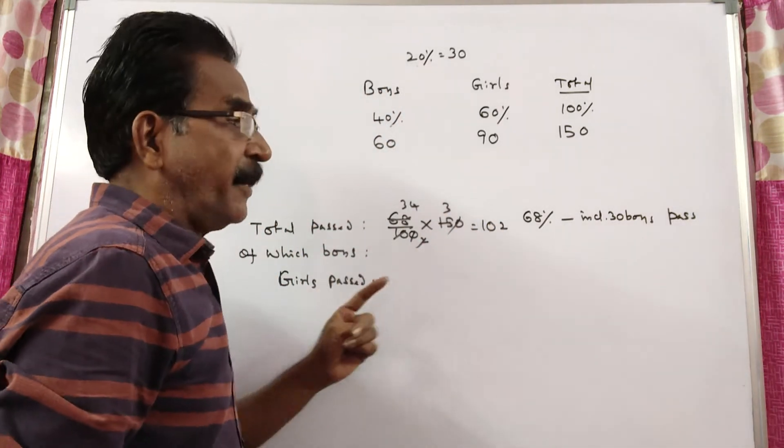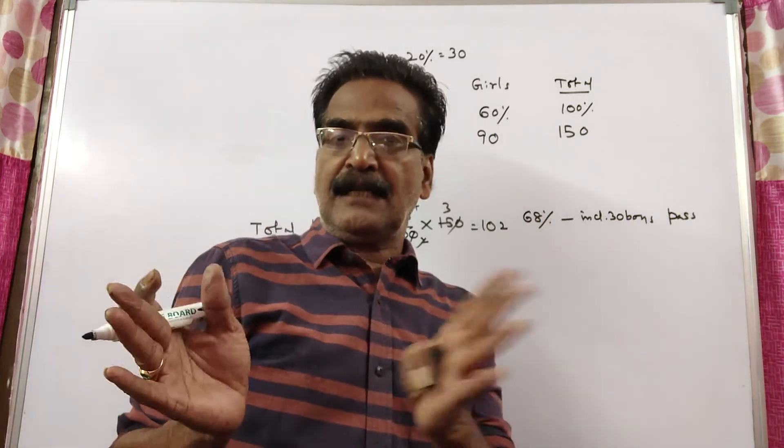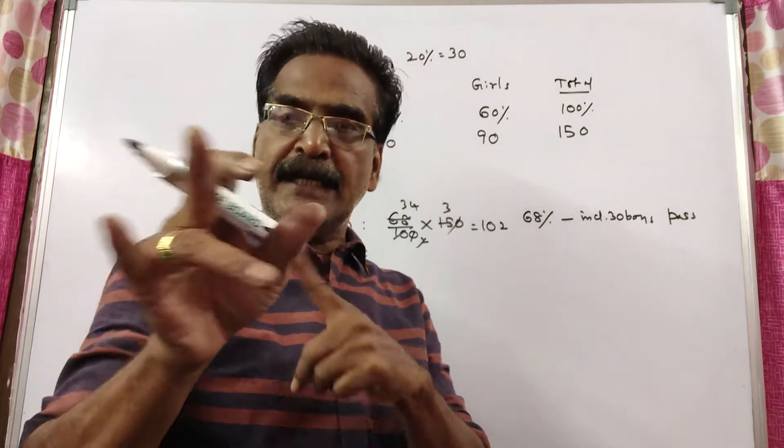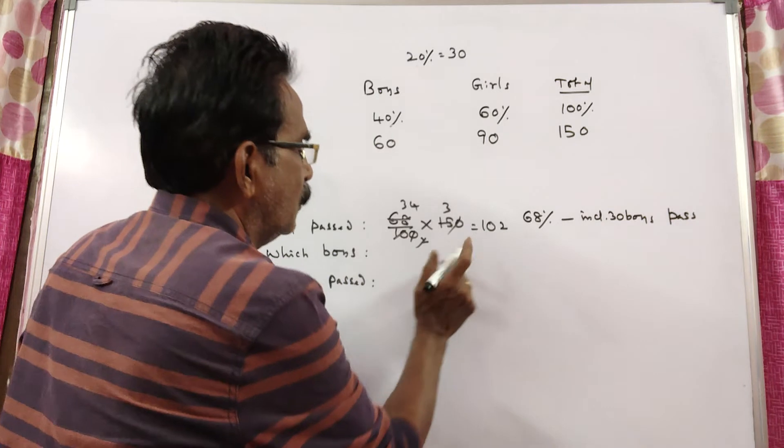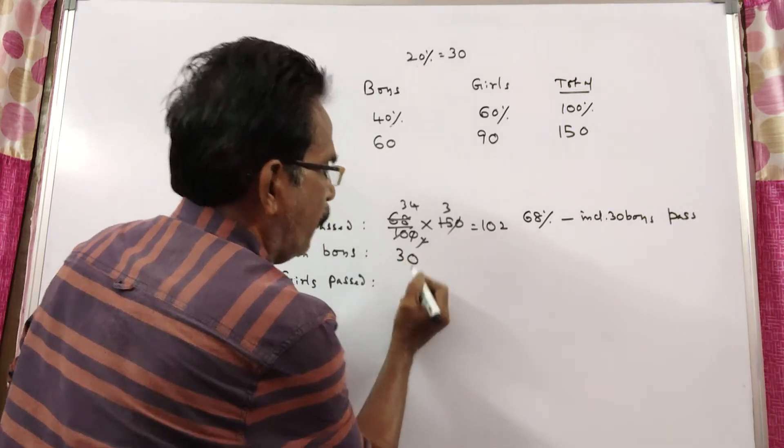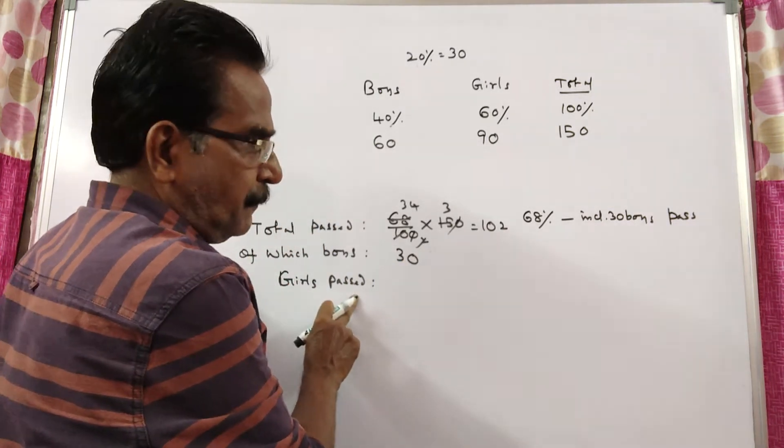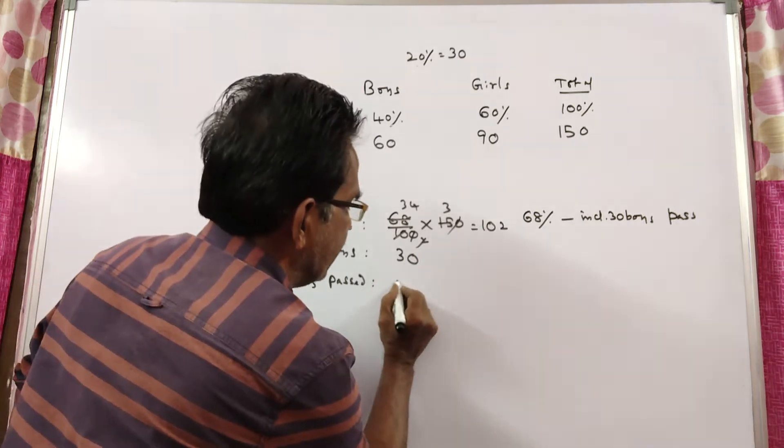68 percent of the students passed including 30 boys. So this 102 includes 30 boys. So girls passed 102 minus 30, which is 72.